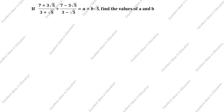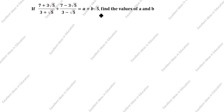Hi friends. Welcome to my channel Excellent Ideas in Education. Today we are going to solve this problem: (7 + 3√5) / (3 + √5) + (7 - 3√5) / (3 - √5) = a + b√5. Find the value of a and b.